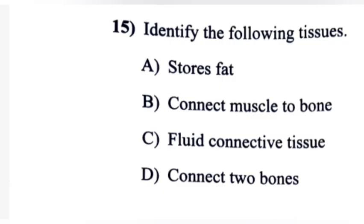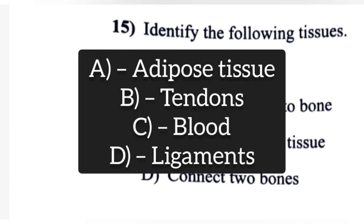15. Identify the following tissues. A: Stores fat, B: Connect muscle to bone, C: Fluid connective tissue, D: Connect two bones.